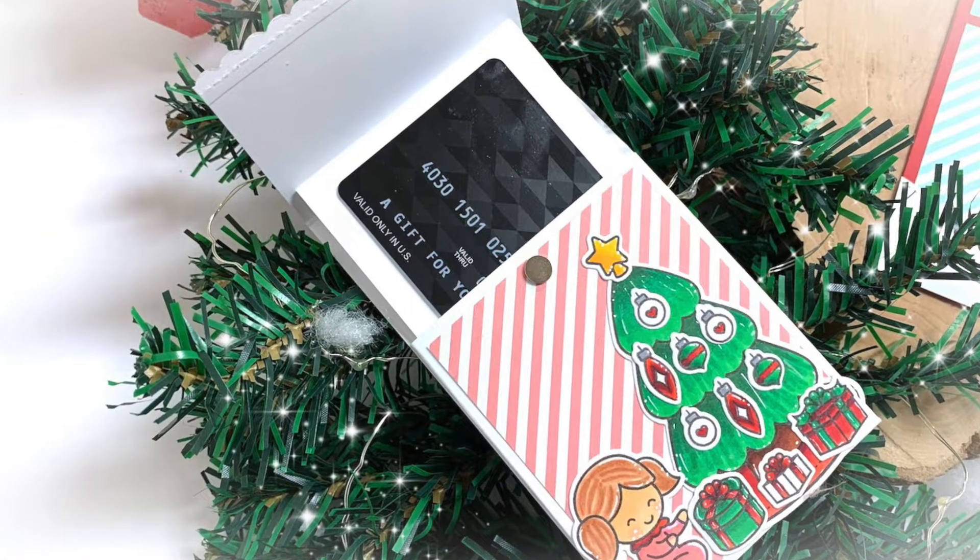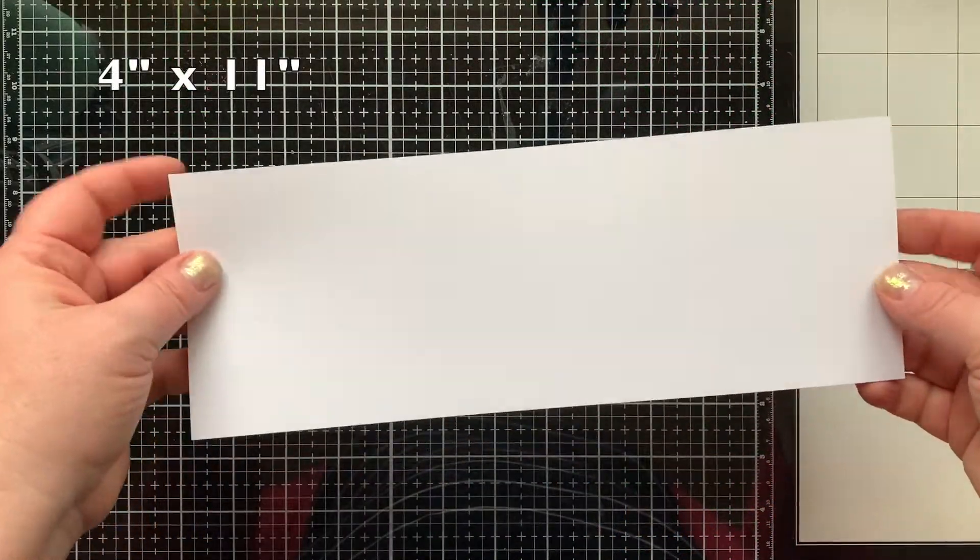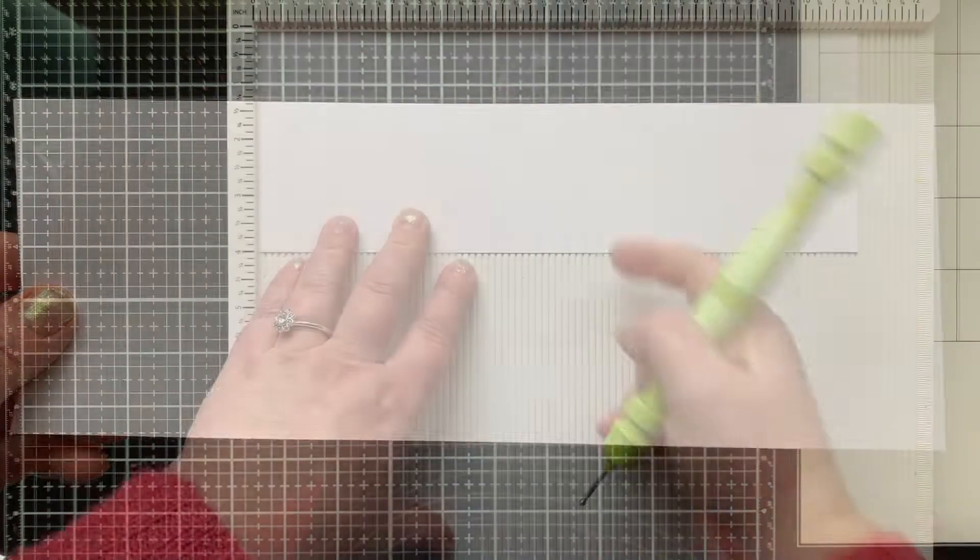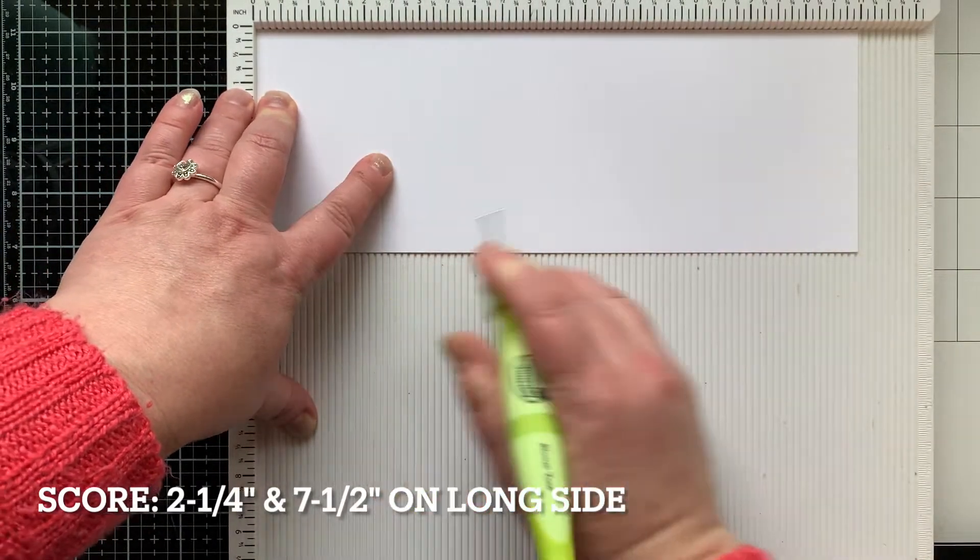It's really super cute and also easy. There are no dies needed to make it. We're going to start with a piece of cardstock that measures 4 inches by 11, and then we're going to score that at 2 and a fourth and 7 and a half on the long side.